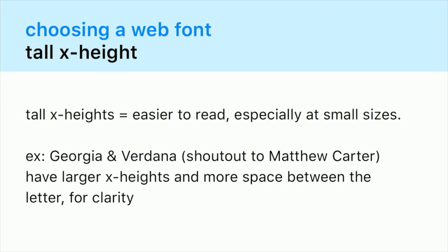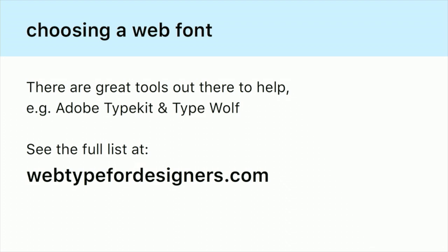Also, if you don't want to use a humanist sans serif, you just want to choose a serif or sans serif that has a tall x-height. The first fonts developed specifically for the web were Georgia and Verdana, and they actually have new versions of those that are amazing. There are great tools to help you choose: Adobe Typekit and another really good one called TypeWolf. These are on our list of resource links.